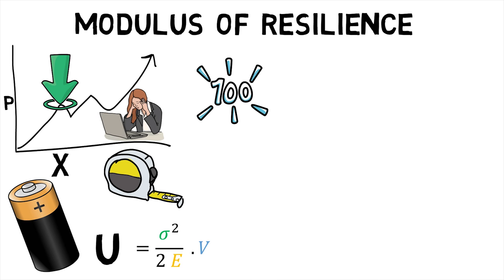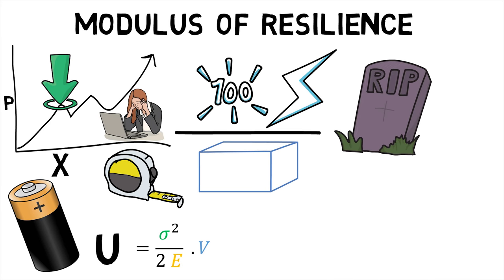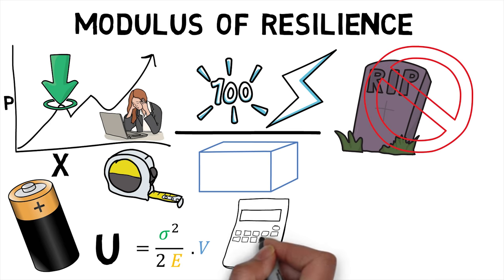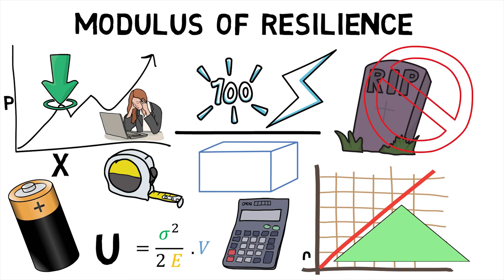Modulus of Resilience is defined as the maximum energy that can be absorbed per unit volume without creating a permanent distortion. It can be calculated by integrating the stress-strain curve from 0 to the elastic limit.